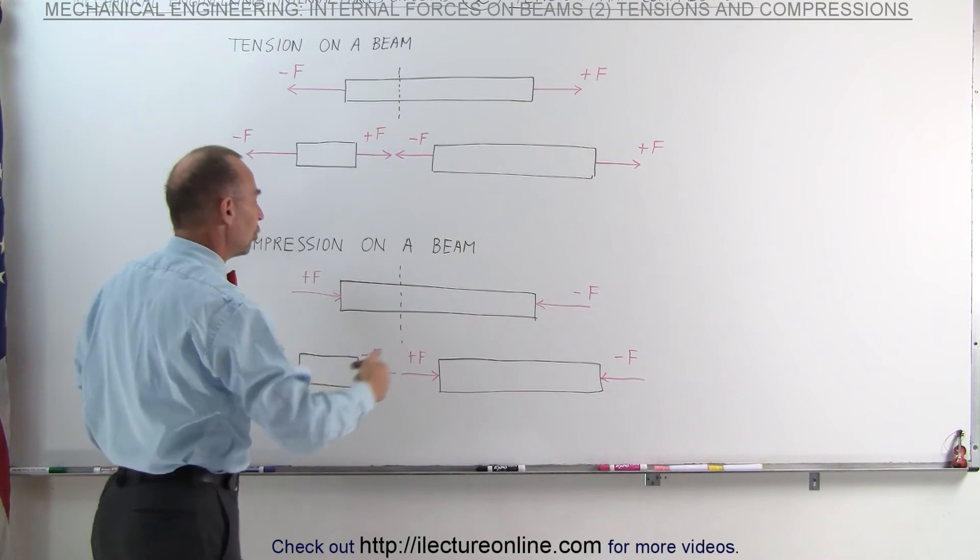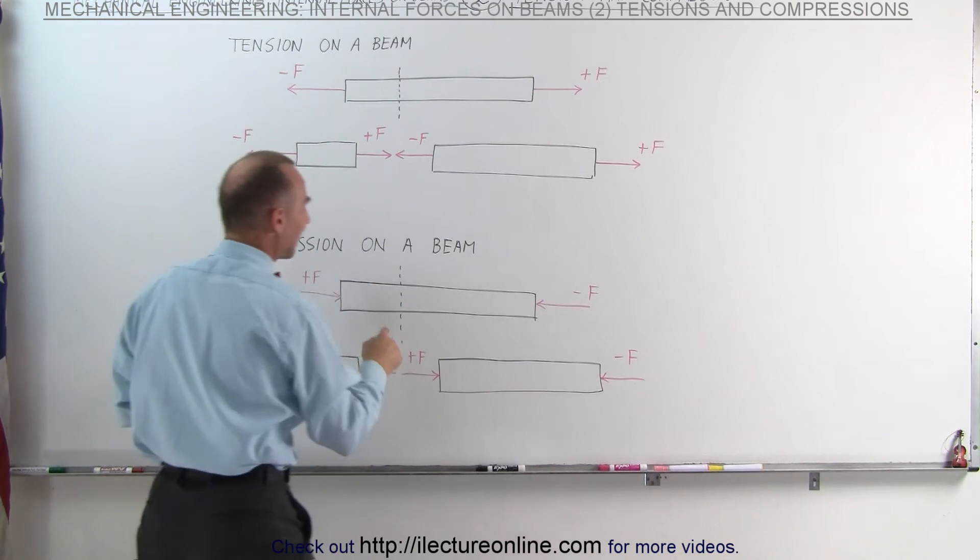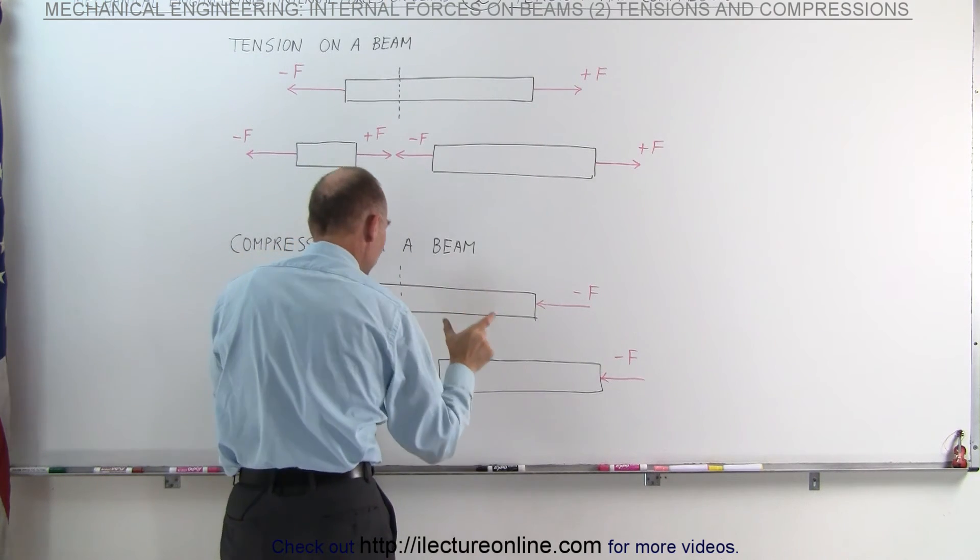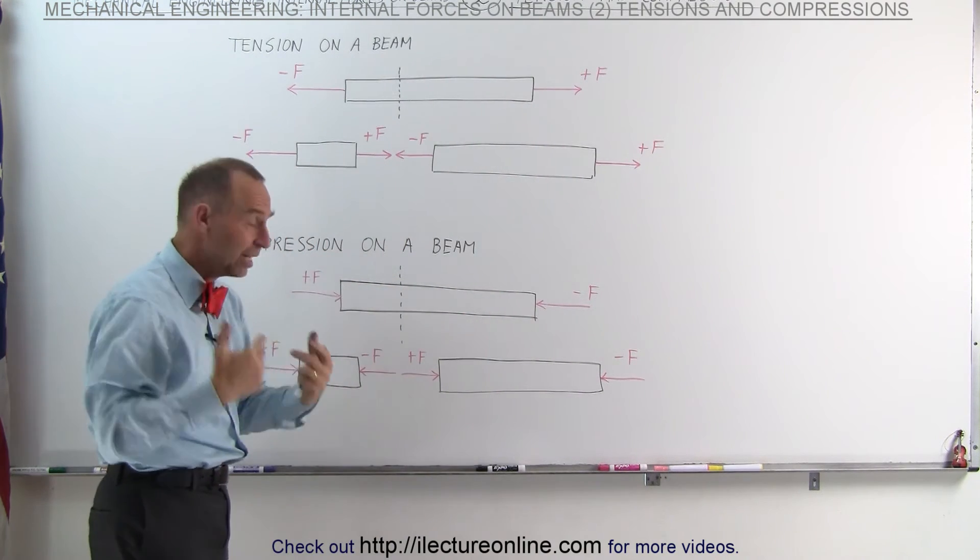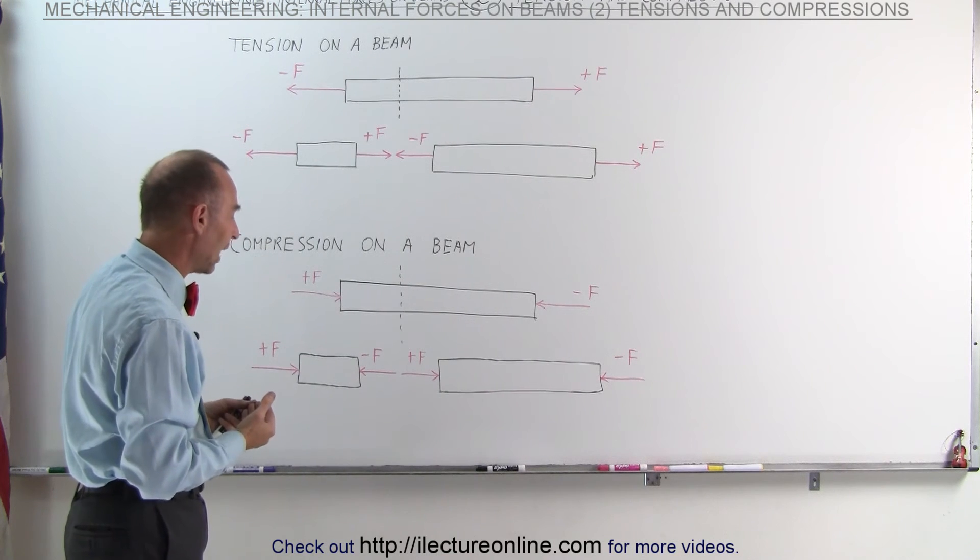When the beam is under compression, notice now we have two forces from opposite directions pushing in this direction. Again, if we want to know what's happening at a particular location on the beam, we can then separate the beam into two sections, just in imagination, just like free body diagrams if you want to look at them.